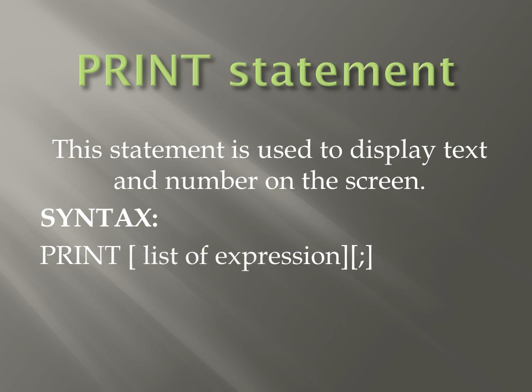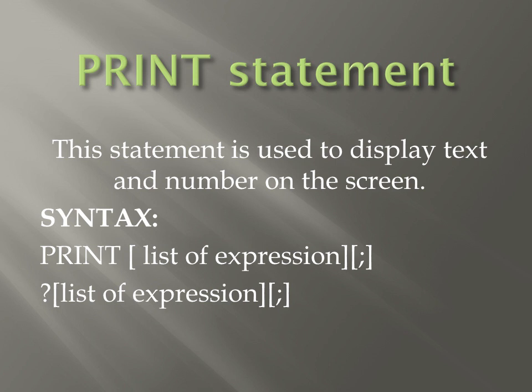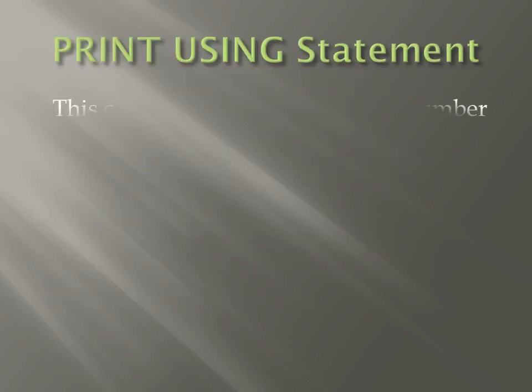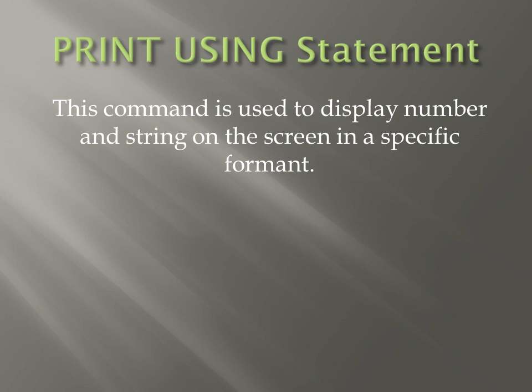We can also use a comma instead of semicolon to separate expressions. The second expression is displayed at the start of the next zone. ہم semicolon اور comma use کرتے ہیں تاکہ expressions الگ ہو سکیں، لیکن بالکل اسی طرح print ہو جیسے print zone میں ہوتا ہے۔ Question mark کے ساتھ بھی sentence لکھیں گے تاکہ behave ویسے ہی کرے جیسے PRINT statement میں کر رہا ہے۔ GW-BASIC ایک اور statement provide کرتا ہے: PRINT USING statement۔